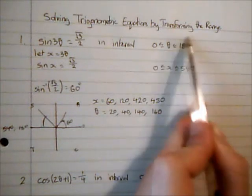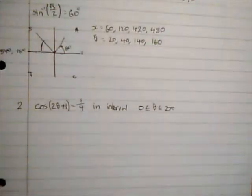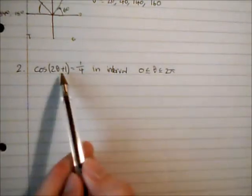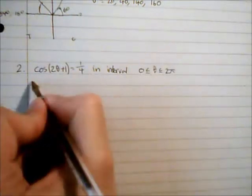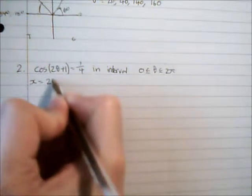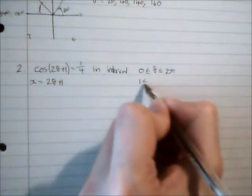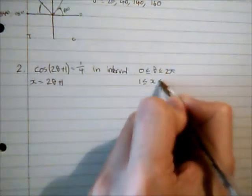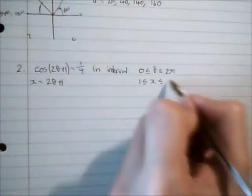I've divided each of these by three to get my solution for theta, and we can see they fit within the original interval. We can take the same approach when we have something like this: 2 theta plus 1 as an interval. I'm going to use the substitution x equals 2 theta plus 1. So my range: double and add 1, so that gives me 1, and this becomes 4 theta plus 1.